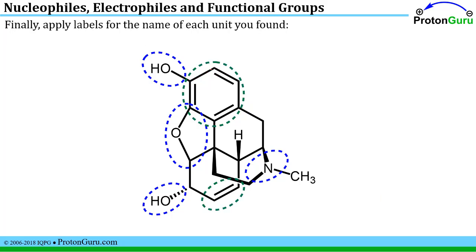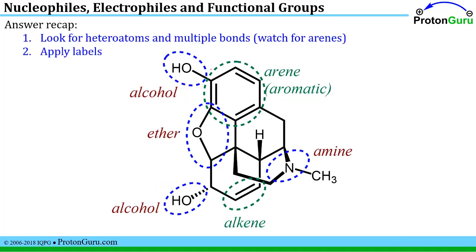The last thing you have to do, once you've identified the heteroatoms and the multiple bonds, is to fill in the names for the different functional groups. You look for the heteroatoms and multiple bonds, watch for the arenes, and then apply your labels. So here we have the alcohol functional group, ether, alkene, amine, and the arene or aromatic functional group.